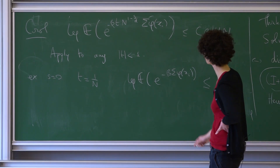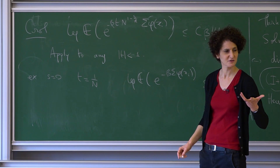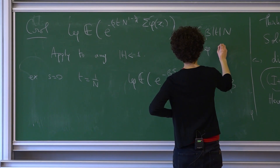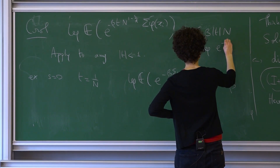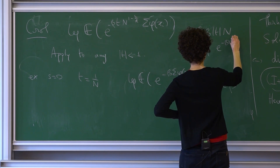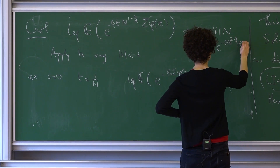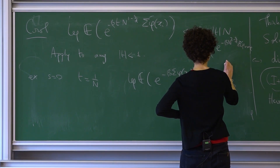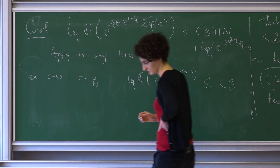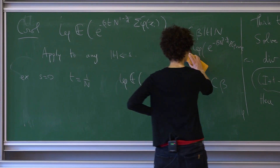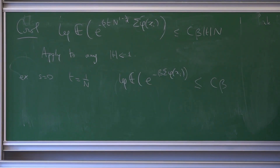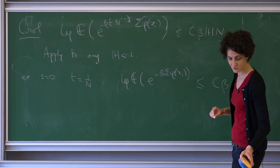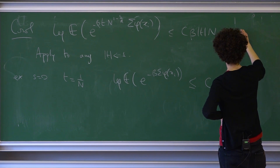What we have shown — the corollary — is that log of the expectation of e^(beta N^(1-s/d) * sum phi(xi)) is bounded by c*beta*t*N. Apply to any t that's small enough. For instance, if s = 0, you take t = 1/N, and you find that log of expectation of e^(-beta * sum phi(xi)) is bounded. There are also explicit terms: a t-squared integral of |grad phi|^2, and other terms in t. If you take s = 0, t = 1/N, the variance term will be exactly order 1.